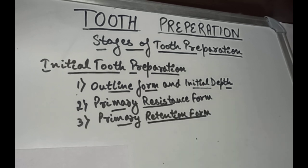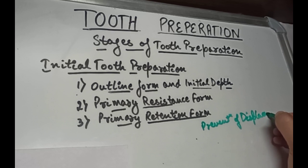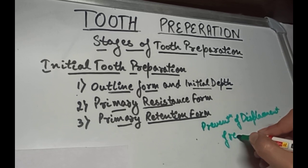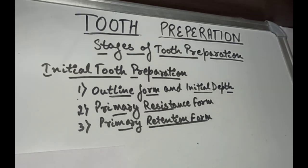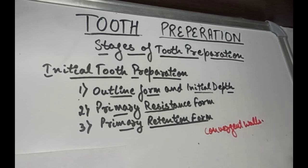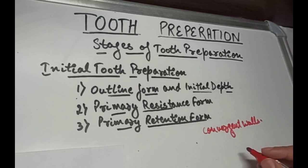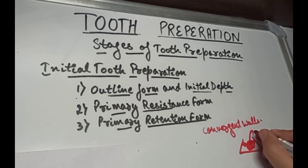The third step of the initial tooth preparation is the primary retention form. Retention means prevention of displacement — specifically prevention of displacement of restorative material. The features for the primary retention form include convergent walls as the first feature, meaning the walls of the preparations are slightly converging towards each other so they lock the restorative material and prevent its dislodgement occlusally.